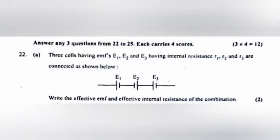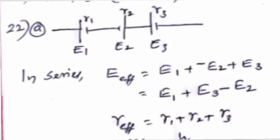Question 22a: Three cells having EMFs e1, e2, and e3 with internal resistances r1, r2, and r3 are connected as shown. Write the effective EMF and effective internal resistance of the combination. Answer: In series, E_eff = e1 + e3 − e2, and R_eff = r1 + r2 + r3.